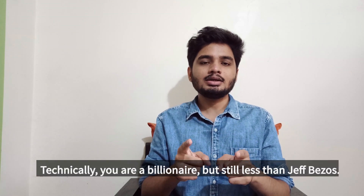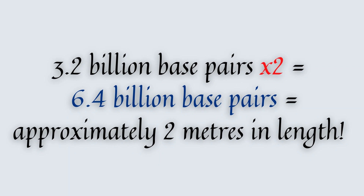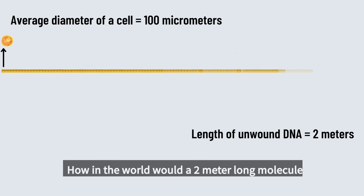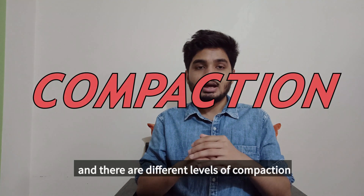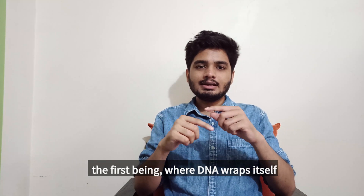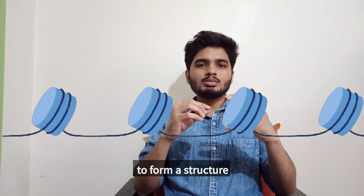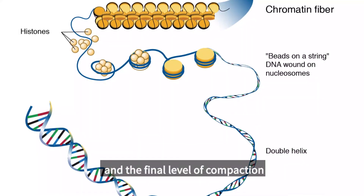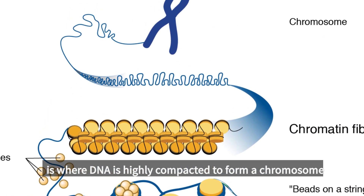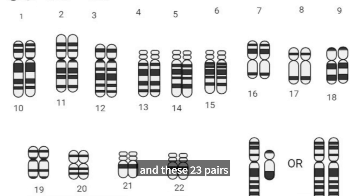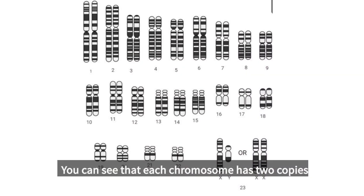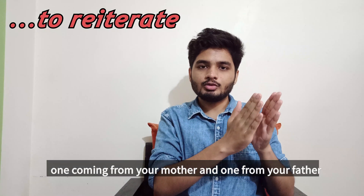That's a lot. Technically, you are a billionaire — but that's still less than Jeff Bezos. 6.4 billion base pairs is approximately 2 meters in length. How in the world would a 2-meter long molecule fit in a cell that has a diameter of one hundredth of a centimeter? To fit in a cell, DNA undergoes something called compaction, and there are different levels of compaction. The first being where DNA wraps itself around ball-like proteins to form a structure called beads on a string. The final level of compaction is where DNA is the most compacted, in a structure called a chromosome. Humans have 23 pairs of chromosomes, and these 23 pairs contain 6.4 billion base pairs. Each chromosome has two copies — one coming from your mother and one from your father.